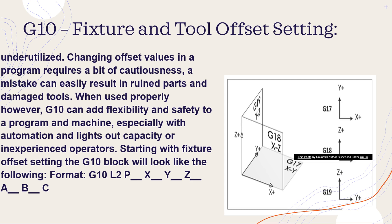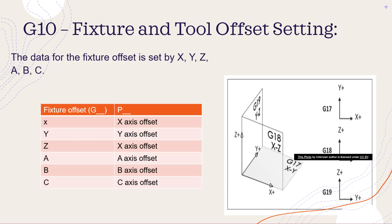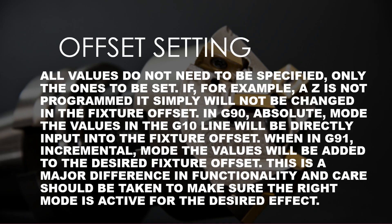Format: G10 L2 P_ X_ Y_ Z_ A_ B_ C_. The data for the fixture offset is set by X, Y, Z, A, B, C. All values do not need to be specified, only the ones to be set. If, for example, Z is not programmed, it simply will not be changed in the fixture offset. In G90 absolute mode, the values in the G10 line will be directly input into the fixture offset. When in G91 incremental mode, the values will be added to the desired fixture offset. This is a major difference in functionality and care should be taken to make sure the right mode is active for the desired effect.